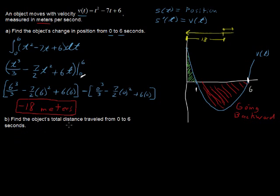Find the object's total distance traveled. Well, that total distance is going to be the sum of forward plus backward. I'll write that out. Sum of the forward travel plus the backward travel. Total distance traveled.